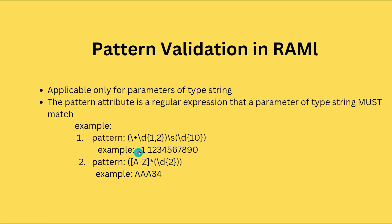Let's take a few examples to understand this. In the first example, we are defining a pattern for a phone number. This has a country code followed by a space and a 10-digit mobile number. We have plus and then one or two digit numbers, then a space followed by the 10-digit mobile number. This is the pattern validation we are doing for phone, and the example we have is matching the pattern.